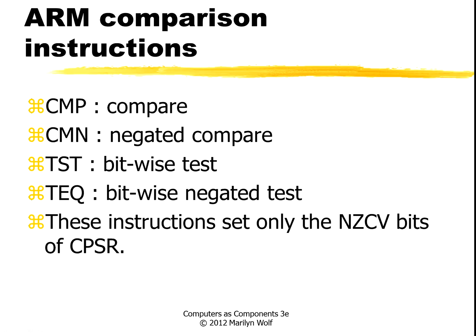There are several comparison instructions — for example, compare, negative compare, bitwise test, and bitwise negated. These instructions set only the NZCV bits of the status register; they don't change the general purpose registers.